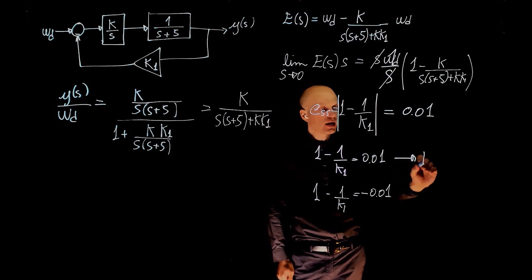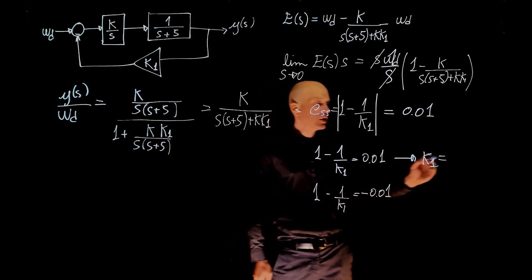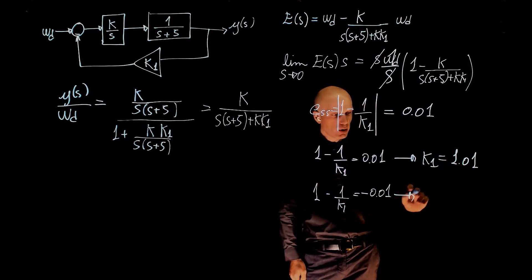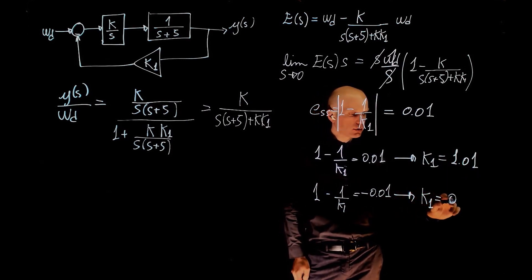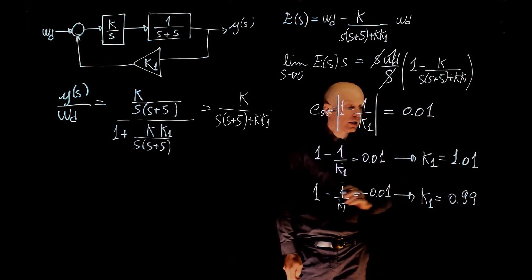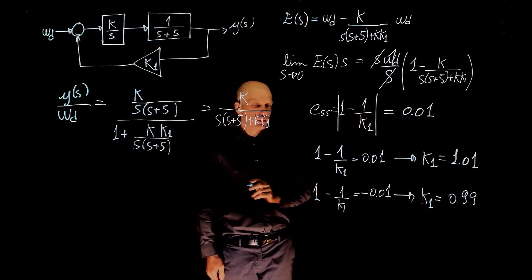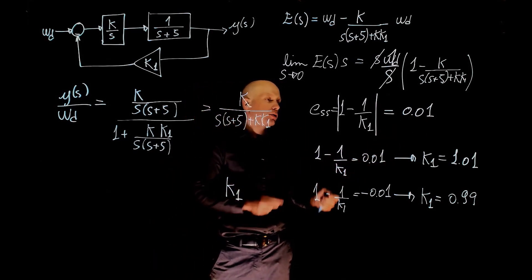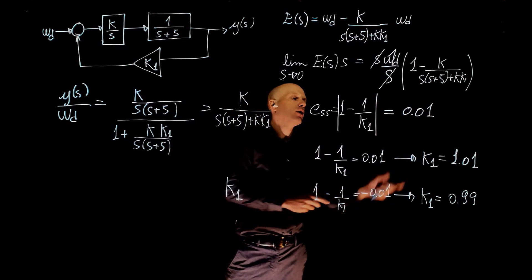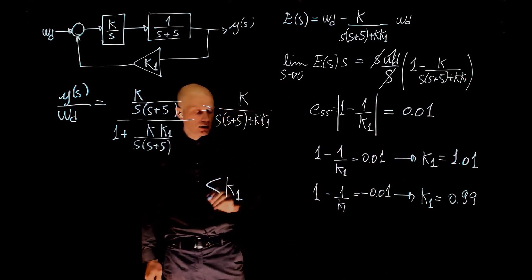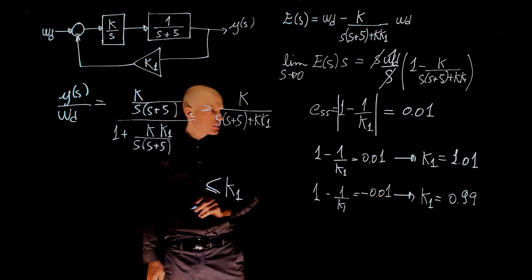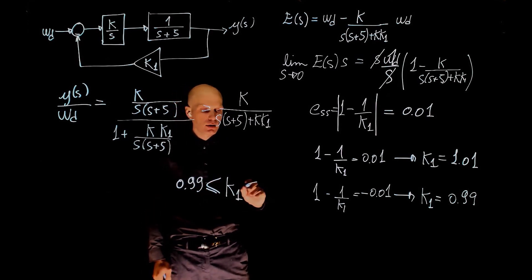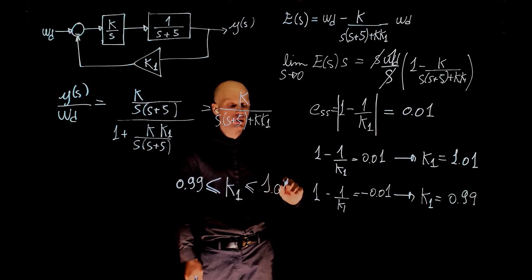If you solve for k1 in the first case, k1 equals to 1.01. And if you solve for k1 in the second expression here, k1 equals to 0.99. Now the range of k1 that will satisfy this expression, that will satisfy a steady-state error of less than 1%, is k greater than 0.99 and smaller than 1.01.